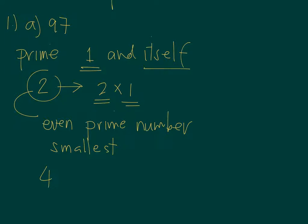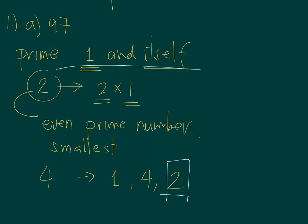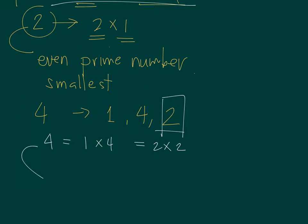Why is four not a prime number? If we list the factors of four: it can be divided by one, by four itself, but there is also an extra number — two. Four in factored form is one times four, but it is also equal to two times two. Since four has other factors besides one and itself, it is a composite number.